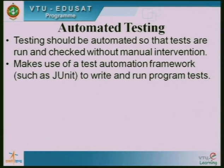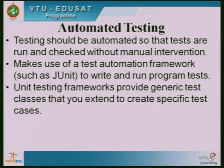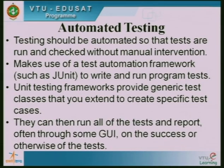Automation uses test automation frameworks such as JUnit to write and run program tests. Unit testing frameworks provide generic testing classes that we extend to create specific test cases. They can run all the tests and report — often through a GUI — on the success or failure of the tests. In automated testing, we input a set of test cases to the software, and automatically these tests are run one by one. In the end, it collects the output, compares it with the expected output, and gives us the result saying how many tests passed and how many failed.